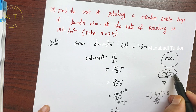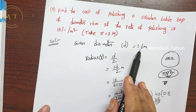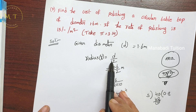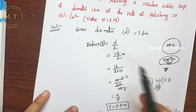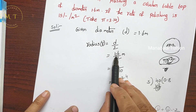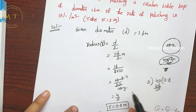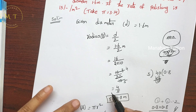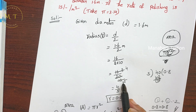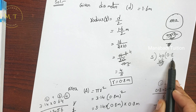The area formula is πr². We substitute the formula with the radius value. First, we find the r value. Radius equals diameter by 2, so r equals 1.6 by 2. Simplifying: 16 by 20, which gives 0.8 meters.